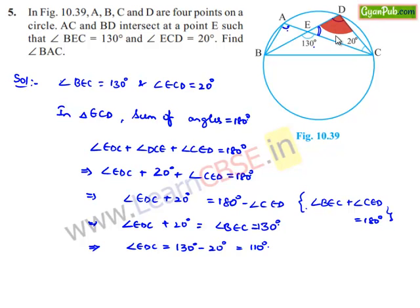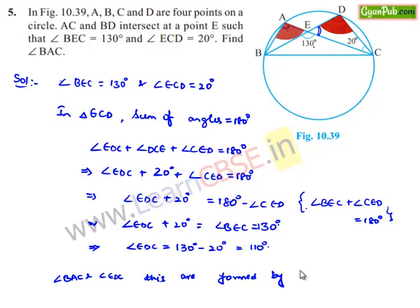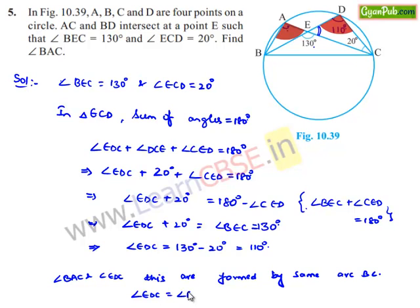Therefore we got angle EDC as 110 degrees. Now considering angle EDC and angle BAC, these are formed by the same arc BC. Therefore angles formed by the same arc are equal, so angle EDC equals angle BAC, which is 110 degrees.